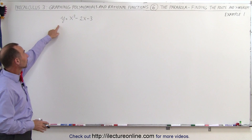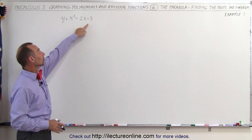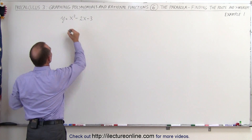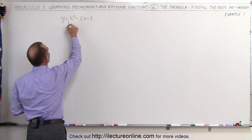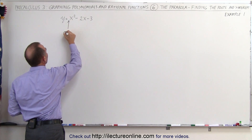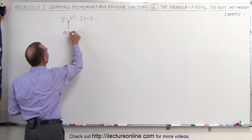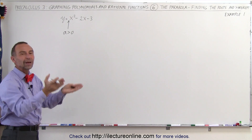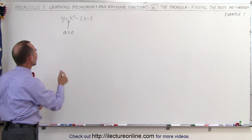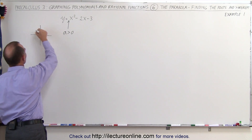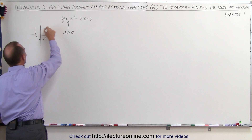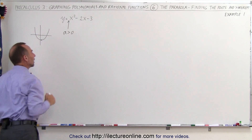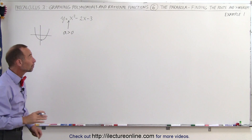The equation for the parabola is y equals x squared minus 2x minus 3. Notice that the coefficient in front of the first term: a is greater than 0, so therefore we know that the parabola opens upward, which means we have a minimum value. The parabola is going to look something like this — opening upward with some vertex, which will be the minimum value of the parabola.